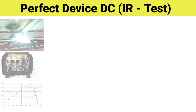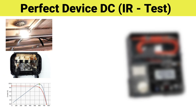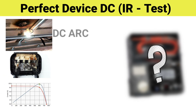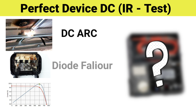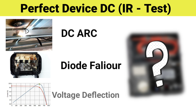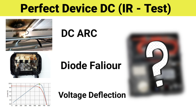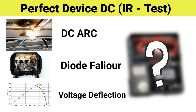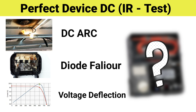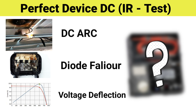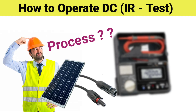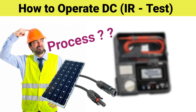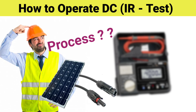There is an amazing device which can do this without any hazard of arc, bypass diode failure, or reverse voltage disturbance in the insulation resistance value obtained during testing. Now let's look at how to use this new device for DC string IR testing.